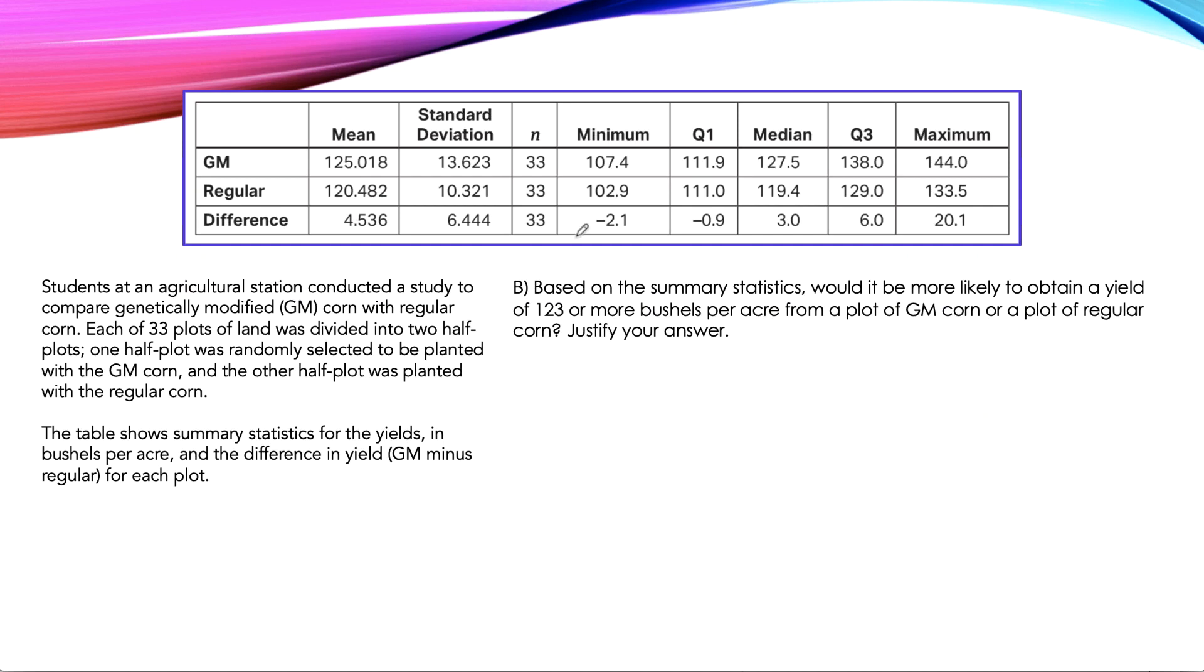Part B: Based on the summary statistics, would it be more likely to obtain a yield of 123 or more bushels per acre from a plot of GM corn or a plot of regular corn? Justify your answer. Here's a picture to give you an idea of what's going on. I'm going to draw these two bell curves here. Remember that bell curves only apply to normally distributed populations. We don't know that, but I'm trying to give you a visual aid so you can picture what my explanation is.